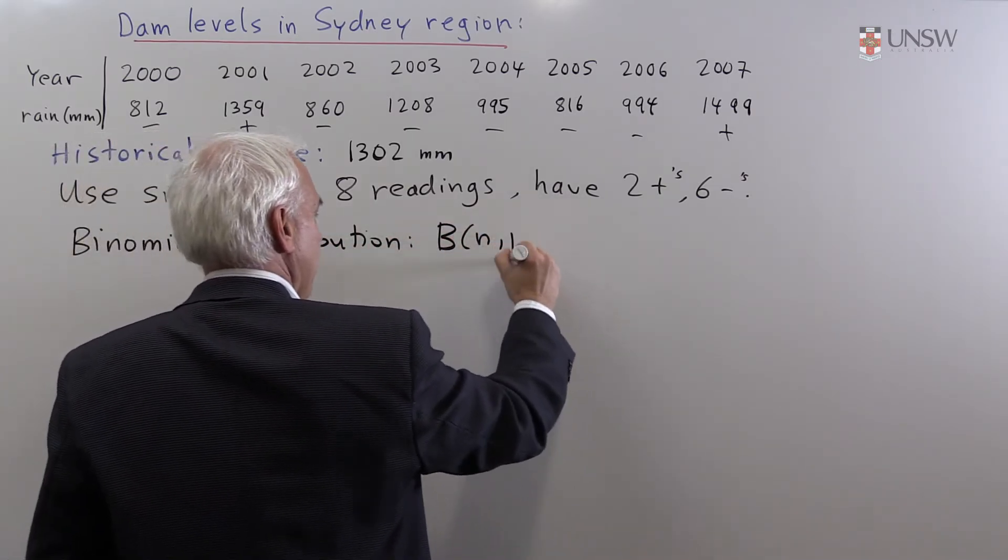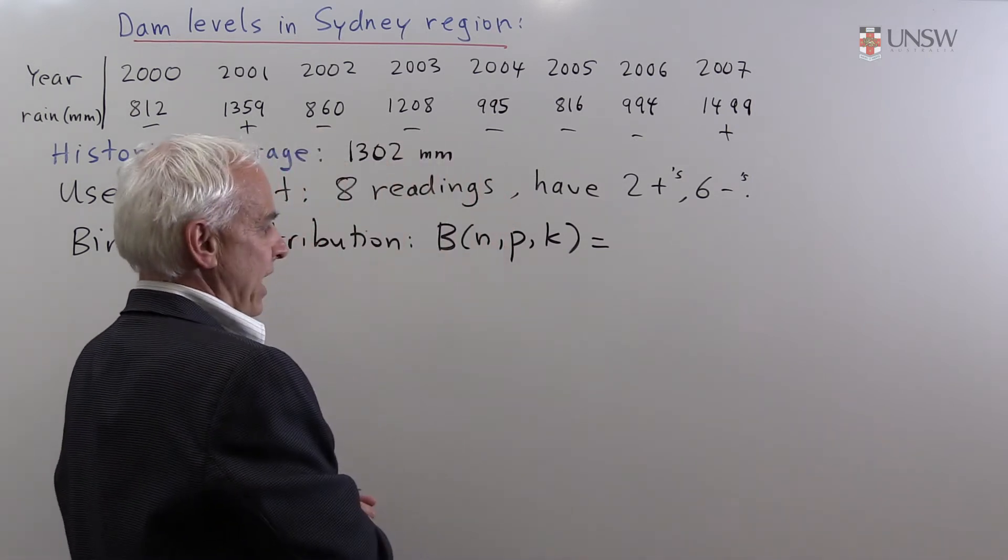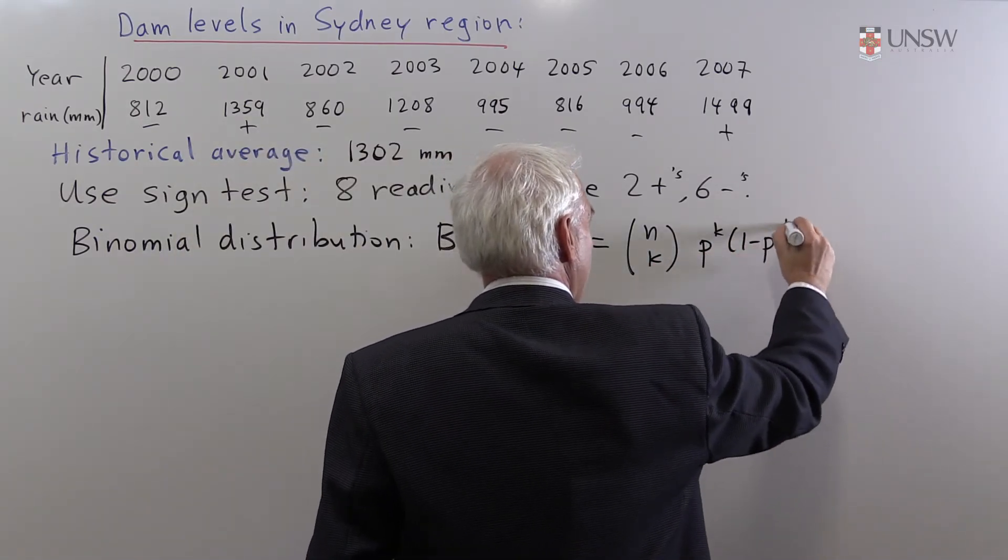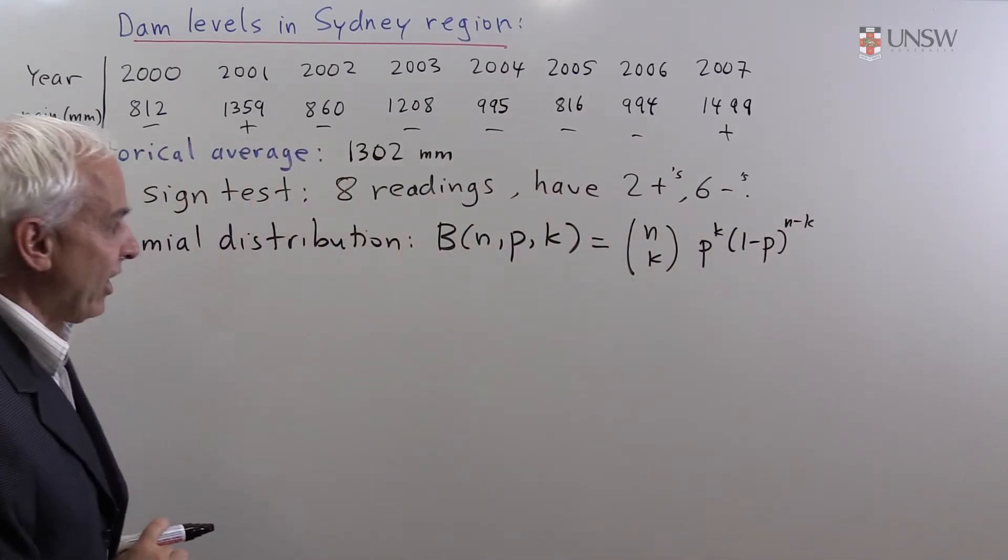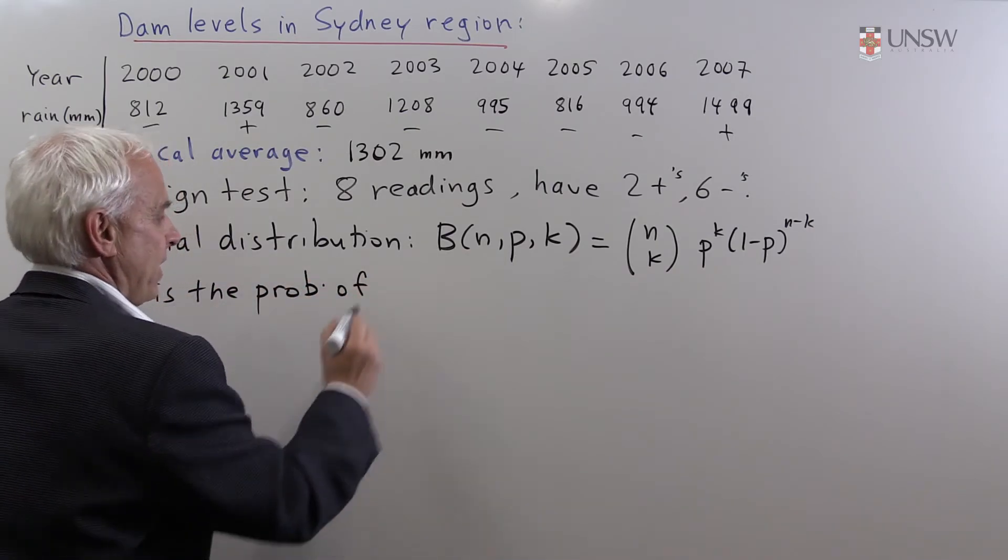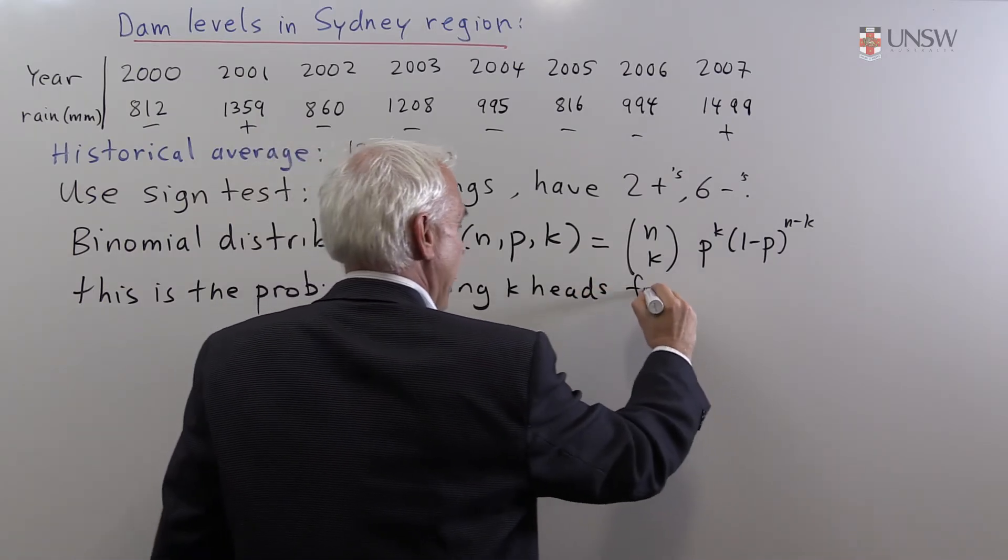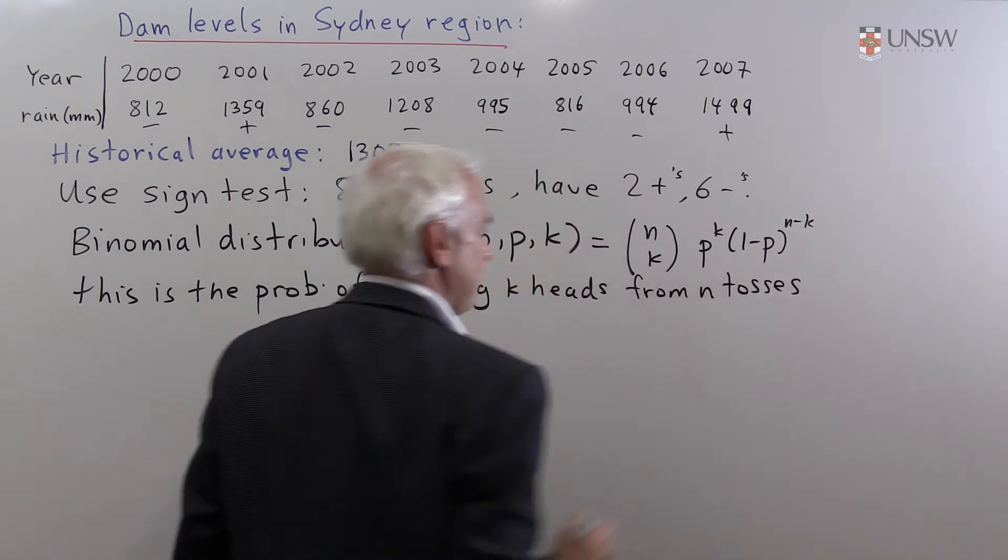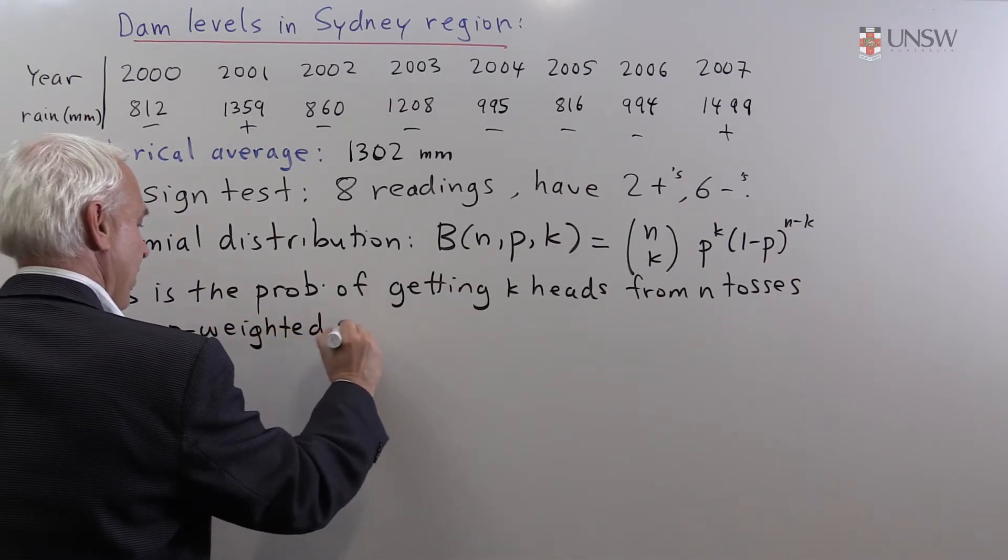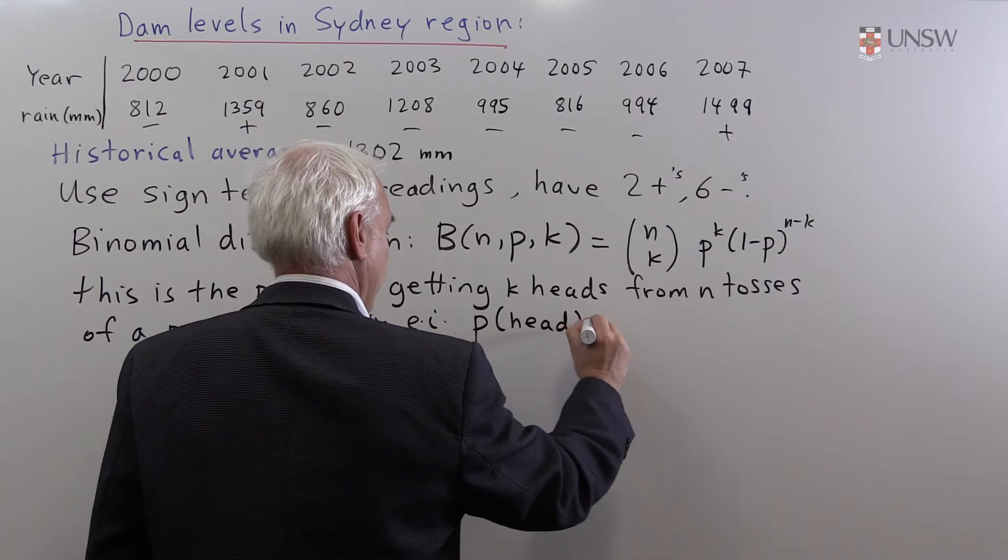So this is the B(n,p,k) distribution. And first of all, I'll write down what the value is. So B(n,p,k) is n choose k, p to the k, and one minus p to the n minus k. And what this represents is, this is the probability of getting k heads from n tosses of a p weighted coin. That means where the probability of a head is p.